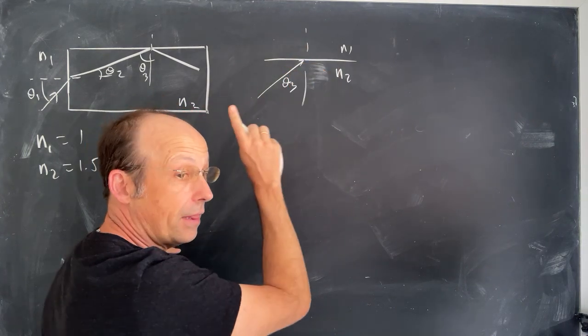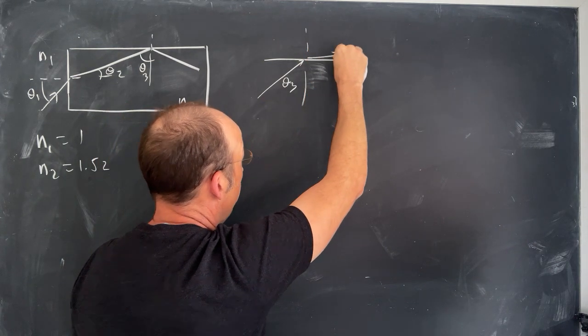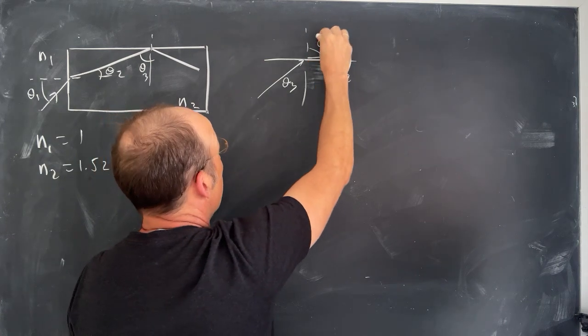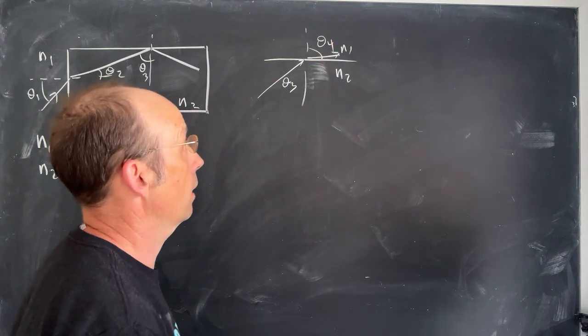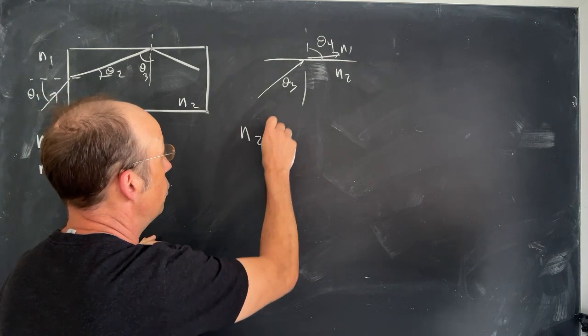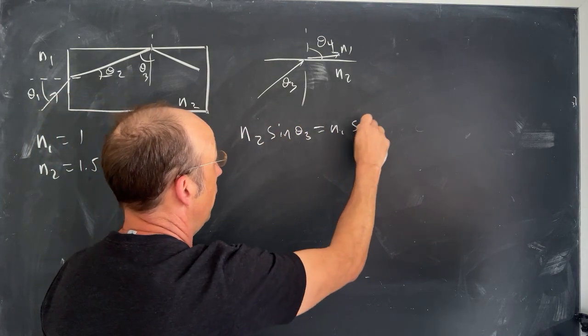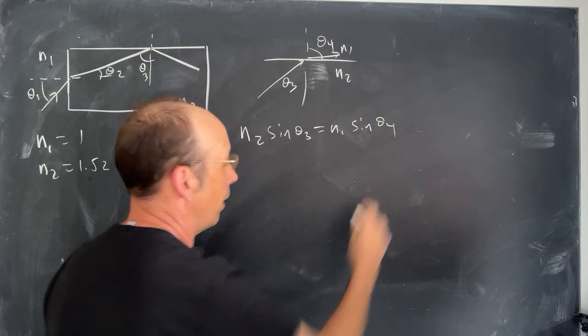And if theta 3 is going to have some light coming out this way, it's going to be refracted, and that's going to be, let's call that theta 4. Okay, so Snell's law says that N2 sine theta 3 is N1 sine theta 4.